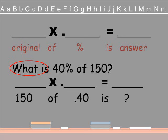150 is going to go into the principal slot. We're going to change 40% to .40. We don't know the answer. We're going to find out that answer. So we do the math. 150 times .40 equals 60.